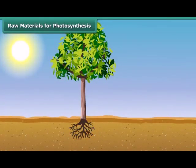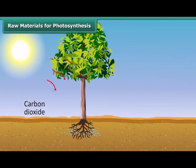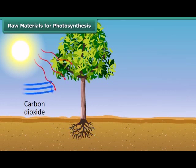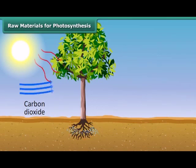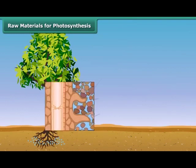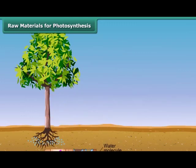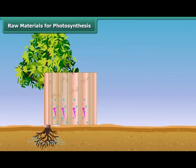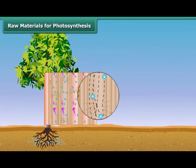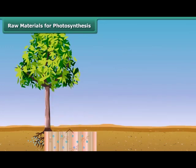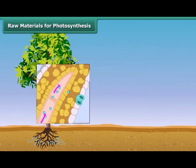In plants, water, minerals, and carbon dioxide are raw materials for the synthesis of food. Water and dissolved minerals are absorbed directly from the soil through roots and sent to the leaves by means of many small vessels present in the stem. These vessels run throughout the root, the stem, the branches, and the leaves, forming a continuous path for water and minerals to reach the leaf.